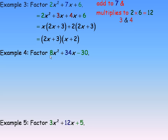In the fourth example, notice that all the coefficients are even, which means there's a common factor of 2 in the entire trinomial. If you miss common factoring that 2 out, you can do it at the end, but if you miss it here, you're looking for two numbers that would add to 34 and multiply to negative 240 — those numbers start to get pretty big. Seeing the common factor will make that next step quite a bit easier.